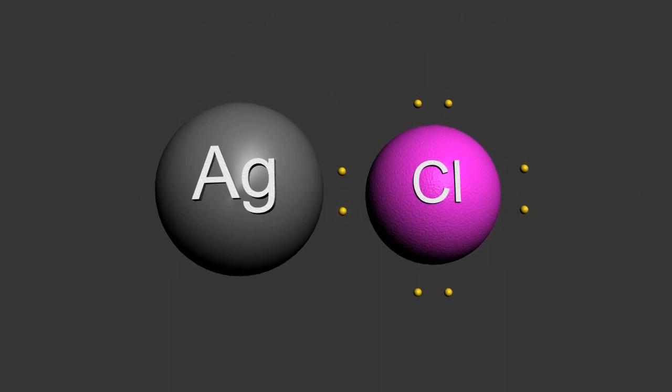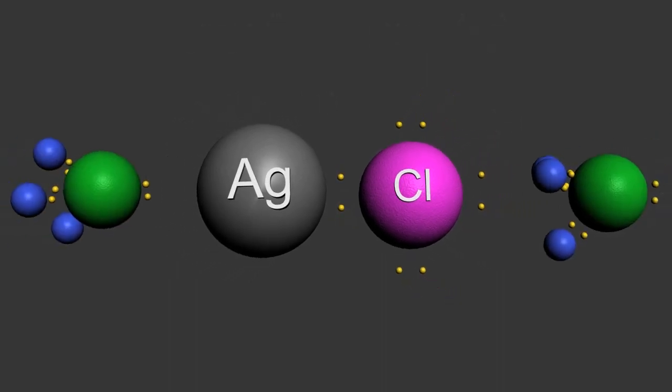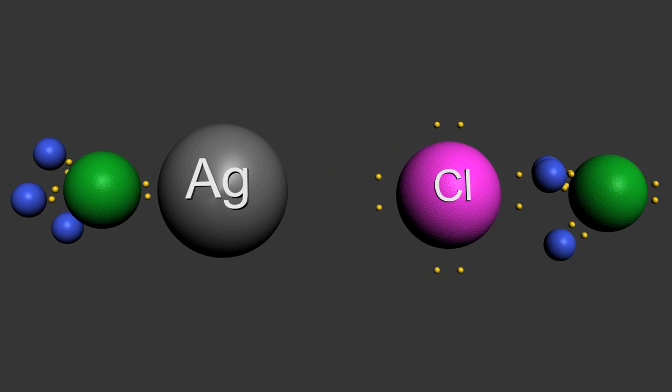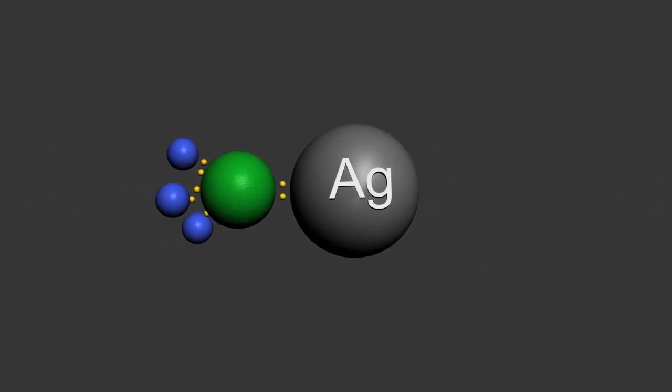The polarity of the ammonia molecule is then able to pull apart the silver and chlorine atoms. Ammonia is a stable molecule with completed orbitals of all of its component atoms, so it doesn't need to react with any other atoms or molecules.